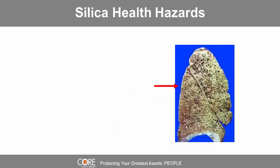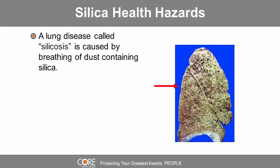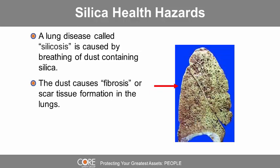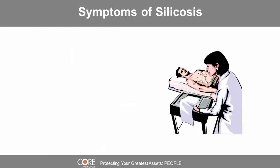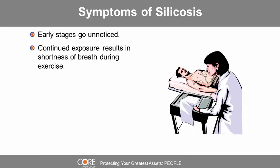Silica health hazards: a lung disease called silicosis is caused by breathing dust containing silica. The dust causes fibrosis, or scar tissue formation, in the lungs. This reduces the lungs' ability to extract oxygen from the air, and there is no cure. Early stages of silicosis go unnoticed, but continued exposure results in shortness of breath during exercise.